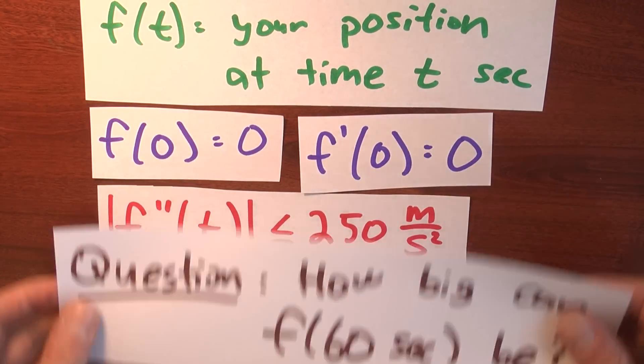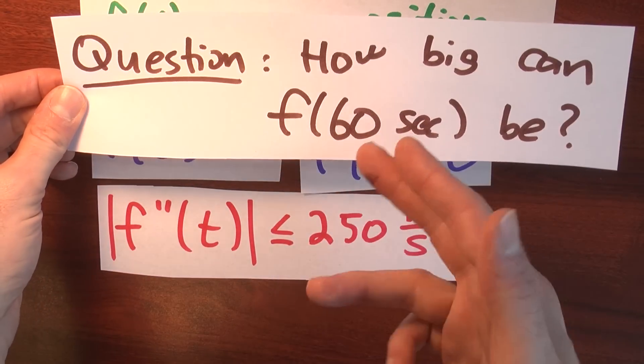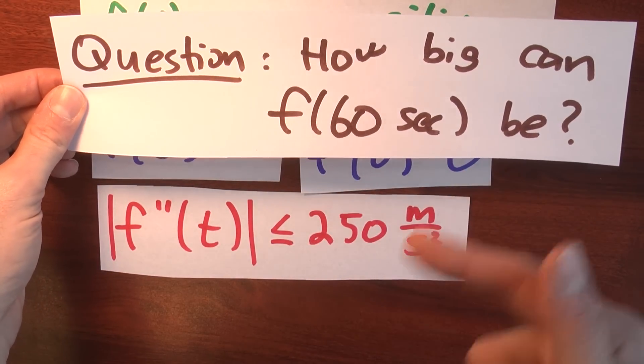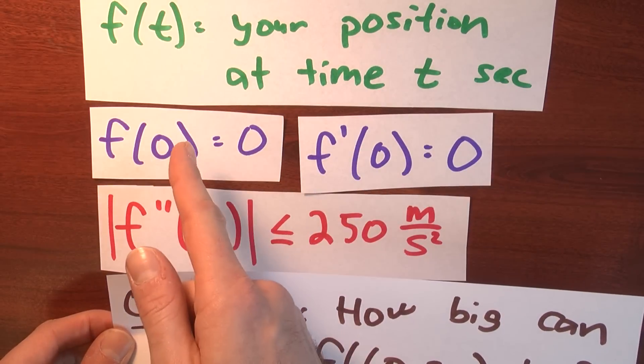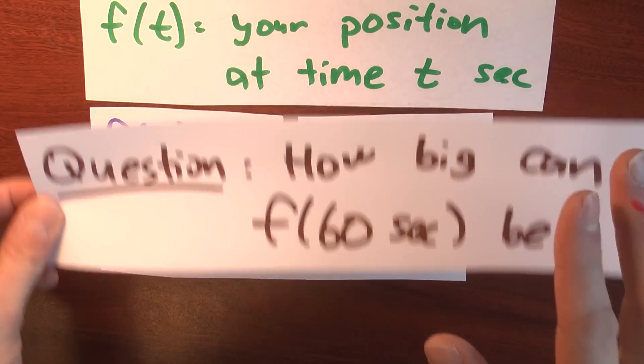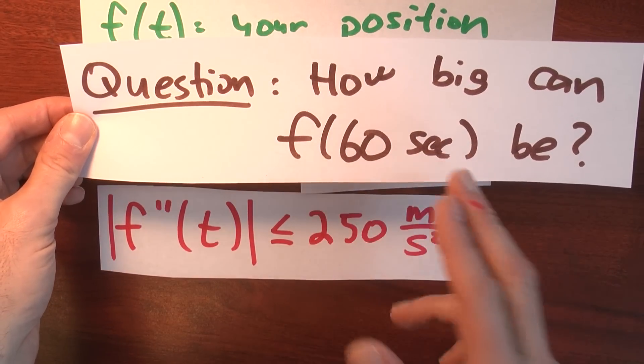And now the question is how big can f of 60 seconds be? How far can you get starting at 0, not moving? How far away can you be after 60 seconds? I want to bound our acceleration so that we survive the trip. Now this problem doesn't have to be approached using Taylor series. But we can do it that way, so let's start down that path.